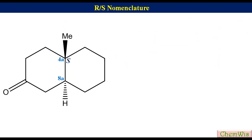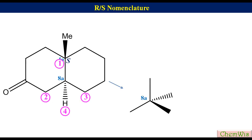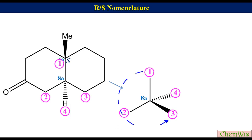For the determination of absolute configuration of 8a, label the groups attached to the center according to their priorities as 1, 2, 3, and 4. In the perspective formula, two groups are on solid line, one on solid wedge, and one on hatched wedge. Make a flying wedge skeleton: the fourth priority group is on a hatched wedge, so putting 1 and 2 on solid line means 3 automatically goes to the solid wedge. Since the fourth priority is on a hatched wedge, there is no need for interchange. Draw an arrow from 1 to 3 via 2. Since the direction is counter clockwise, the configuration at 8a is also S.